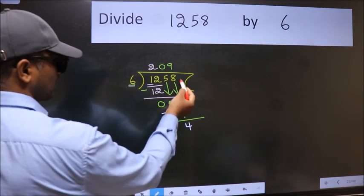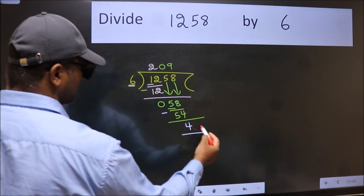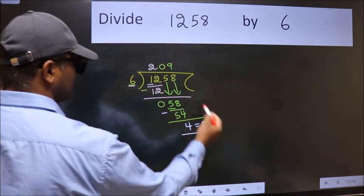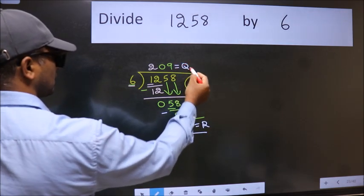No more numbers to bring it down. So, we stop here. This is our remainder and this is our quotient.